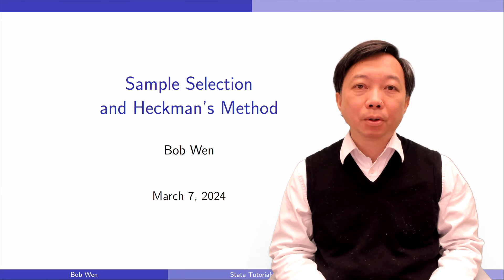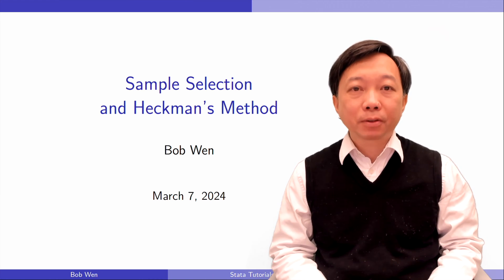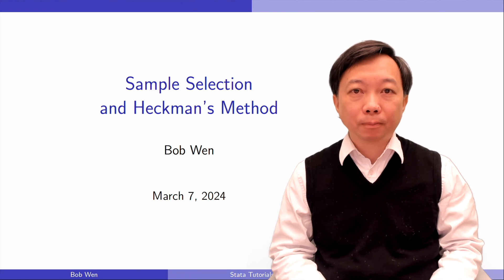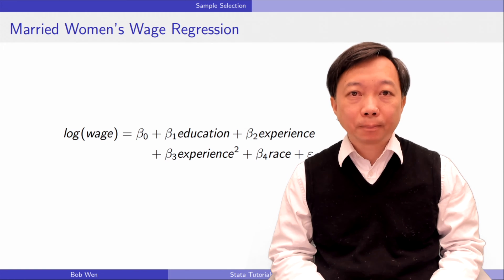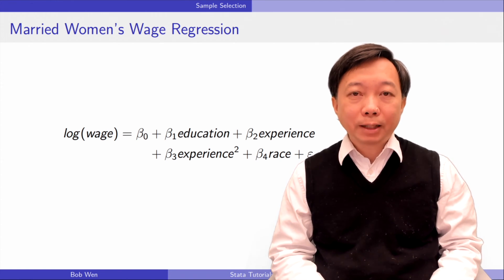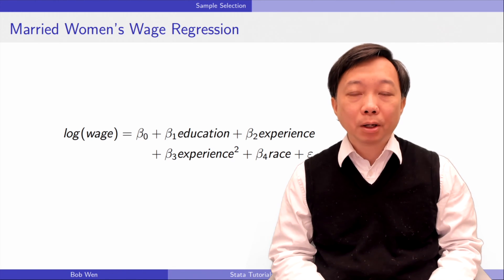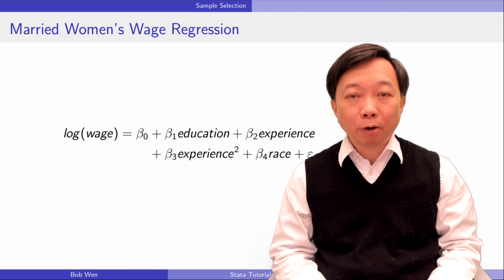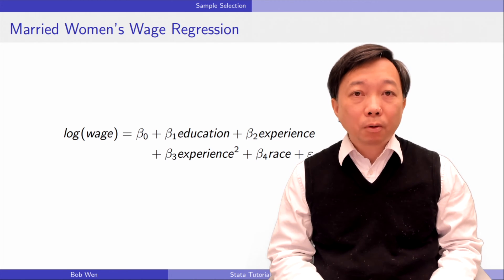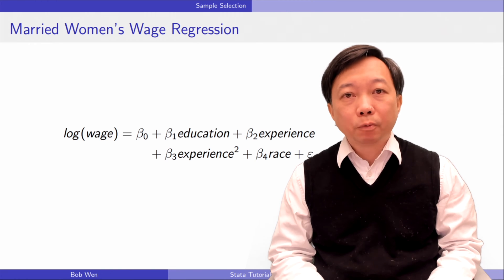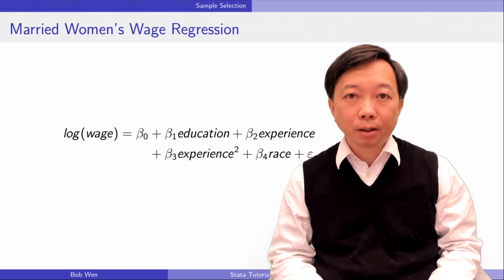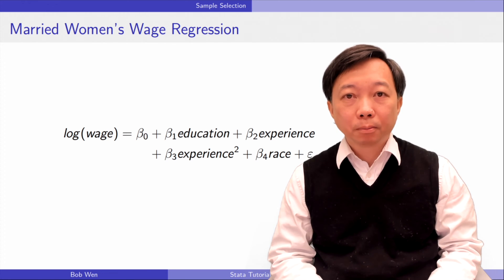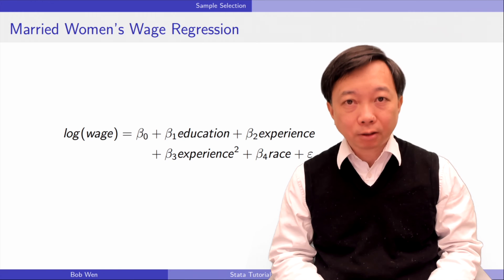Sample selection bias happens when the estimation sample cannot represent the entire population we are interested in. A classic example in econometrics textbooks is the women's wage equation. We regress women's wages on their educational attainment and other explanatory variables and estimate the return to education for women. However, some women did not work when the data were collected. We have wage data for employed women but not for those who were unemployed at the time of the survey. We call this the selected sample because it contains women who self-selected into the workforce.